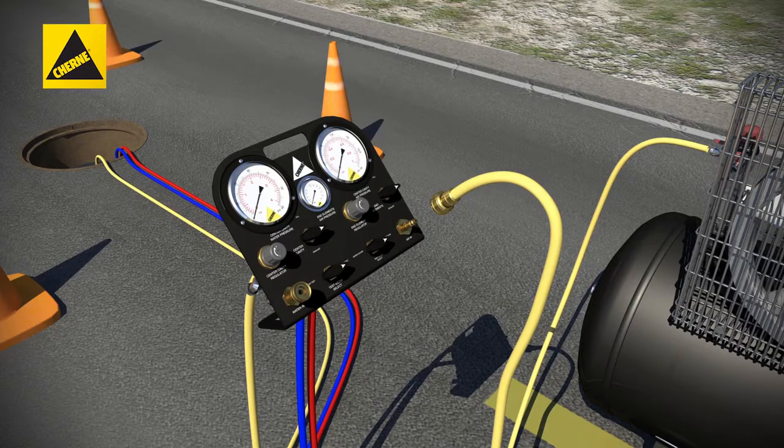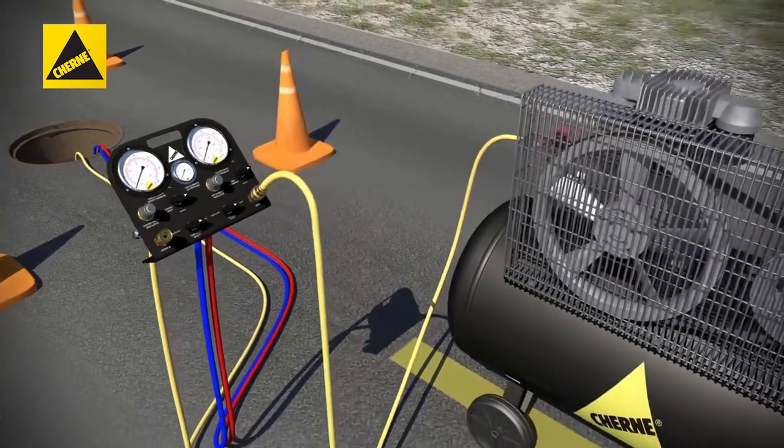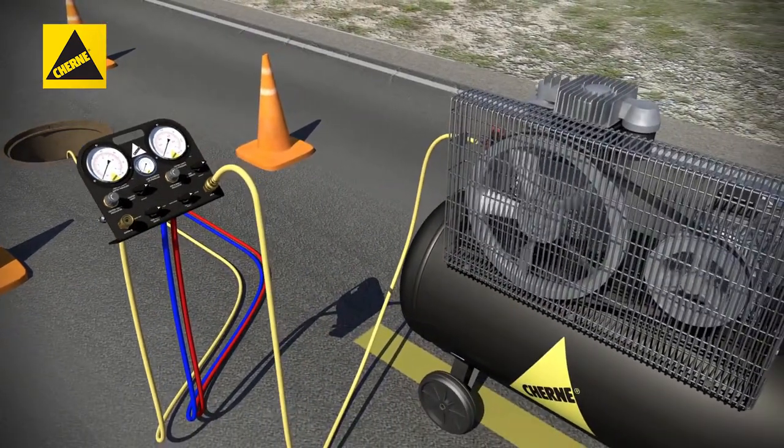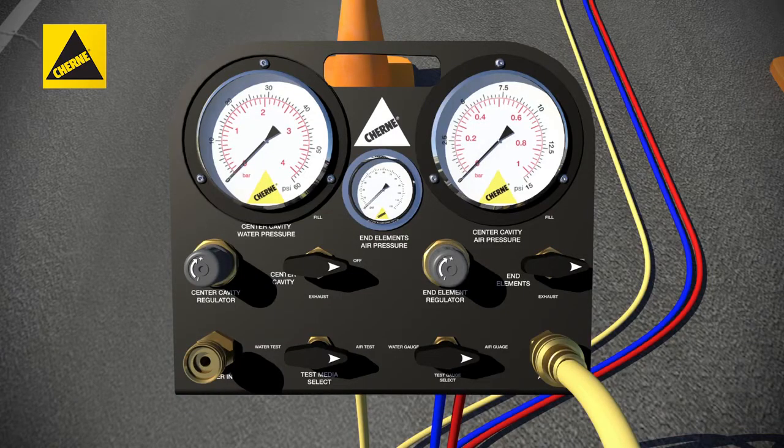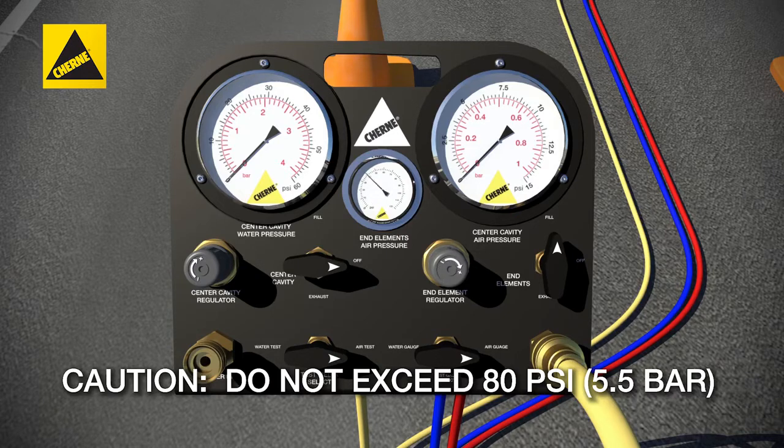Attach the air hose to the air-in connection on the control panel and turn the air compressor on. Place the end element inflation valve in the fill position and adjust the end element regulator until 80 PSI reads on the end element pressure gauge.